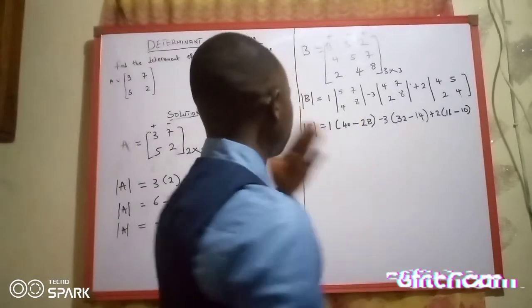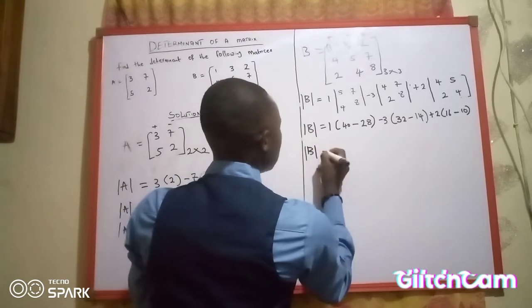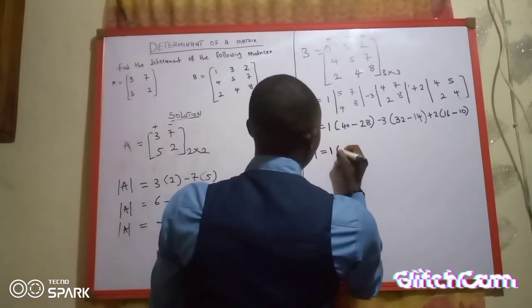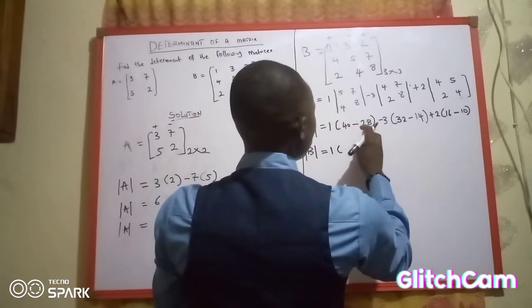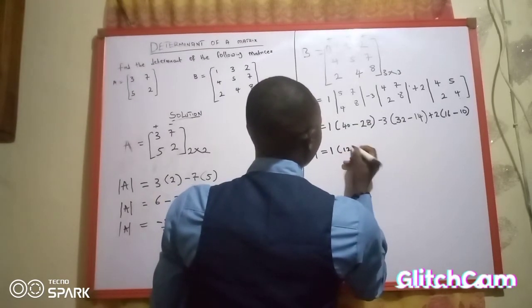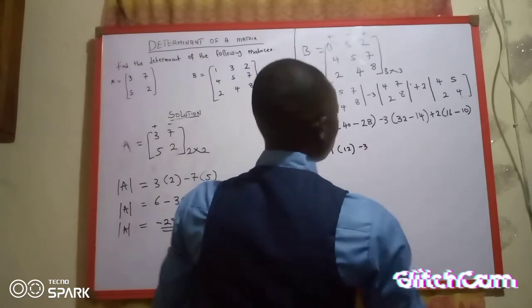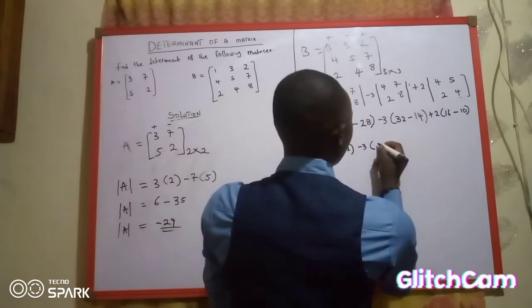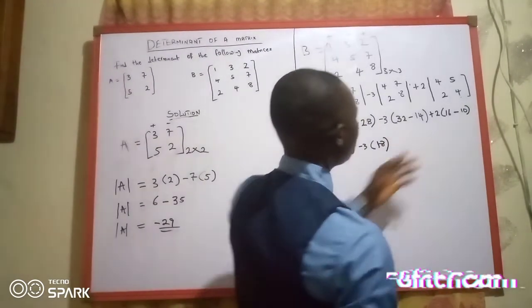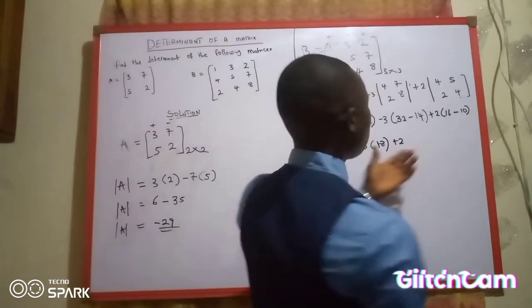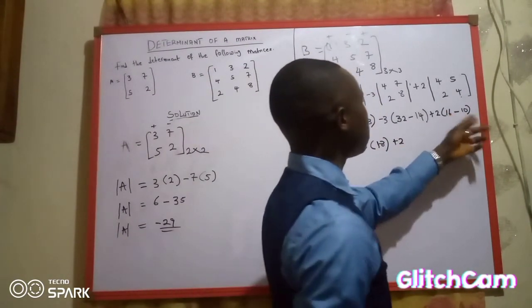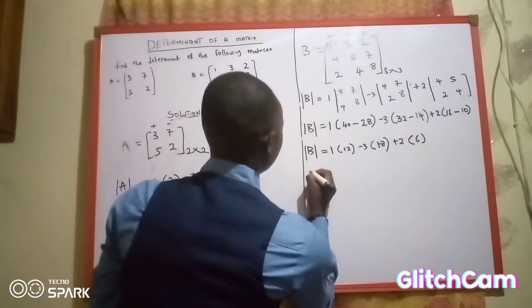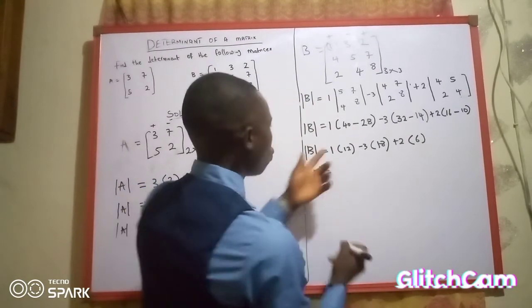From here, you solve the inside of each bracket first. The determinant of B equals: bring out the 1 and open the bracket — 40 minus 28 gives 12. Bring down the minus 3, open bracket — 32 minus 14 gives 18. Then bring down the positive 2, open bracket — 16 minus 10 gives 6.